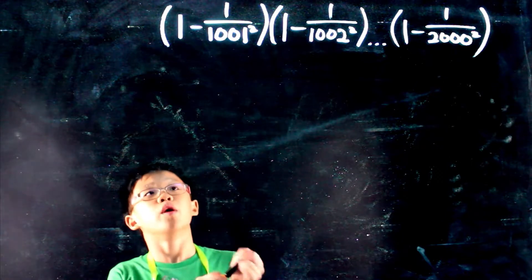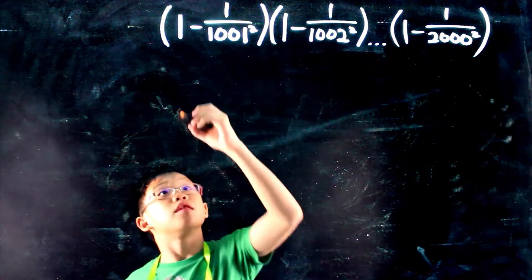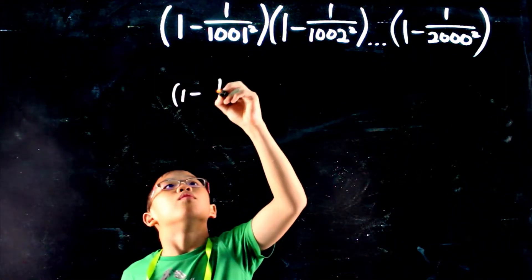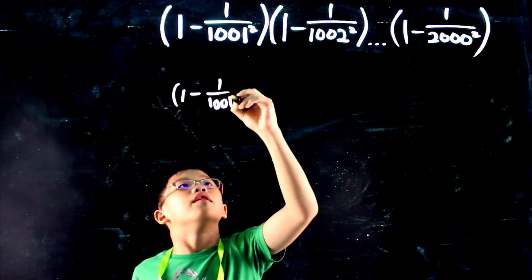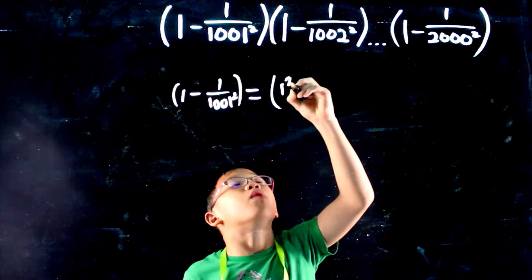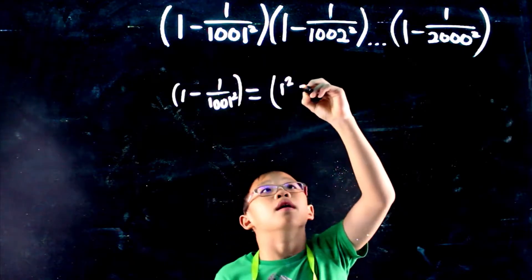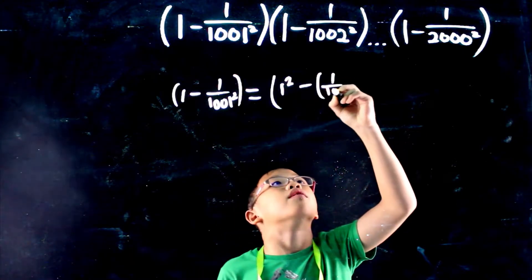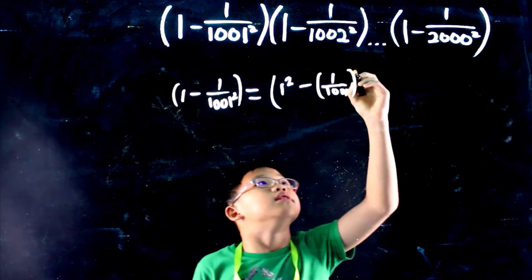We know that 1 squared is 1 which means 1 minus 1 over 1001 squared actually can also equal 1 squared which is a squared minus 1 over 1001 which is b squared.